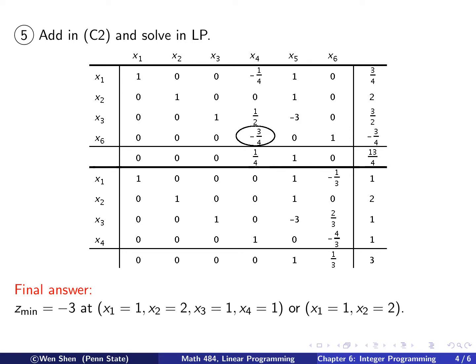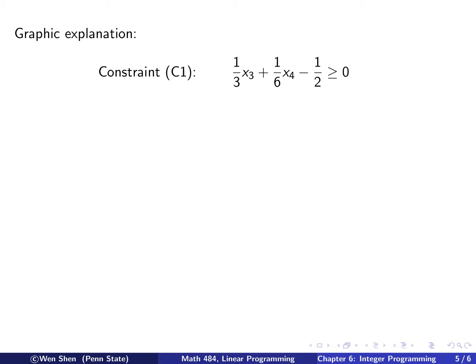And then you can conclude. That's your final answer. You have the minimum of z is negative 3. It's obtained at this basic solution. You list it here. And then you know the original variables are just x1 and x2, or you can state x1 is 1, x2 is 2, and that is the optimal solution to the integer linear programming problem that you started with. So we solved the problem.